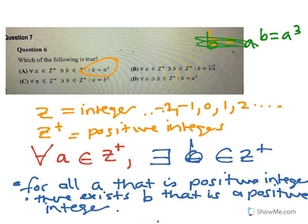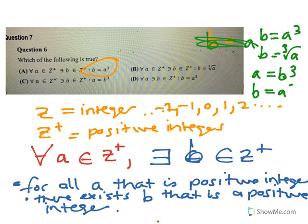All right, then you have b equals the cube root of a. You have a equals b cubed, and then you have b equals a cubed.